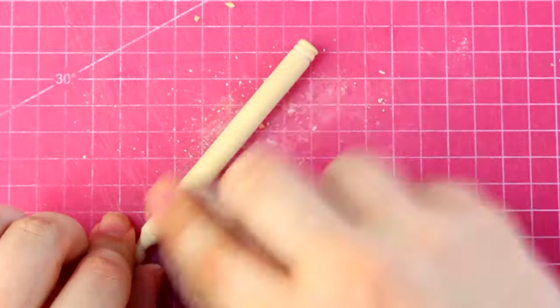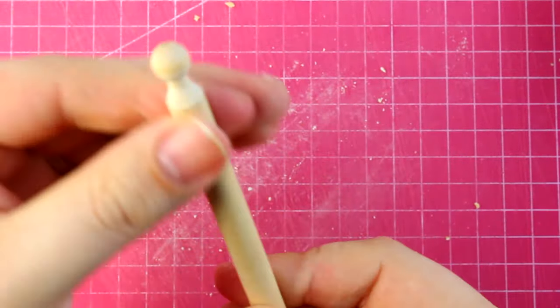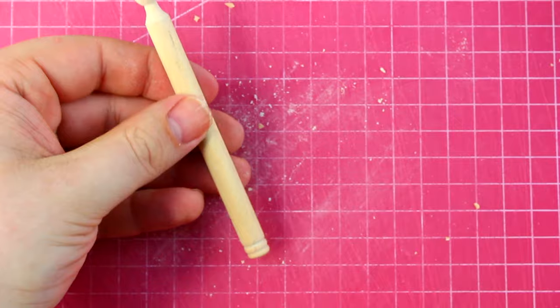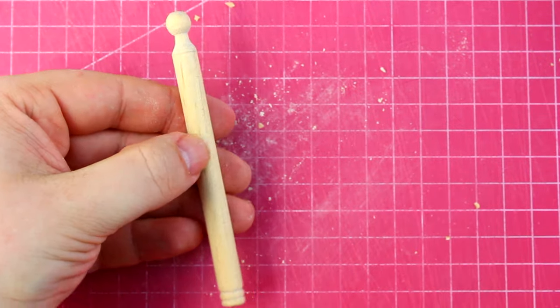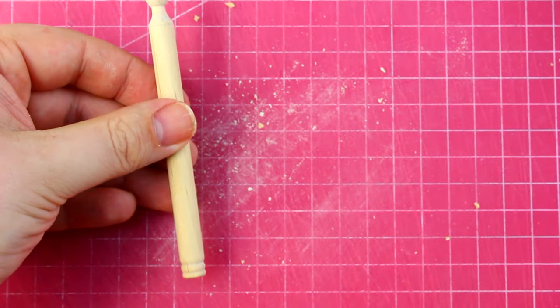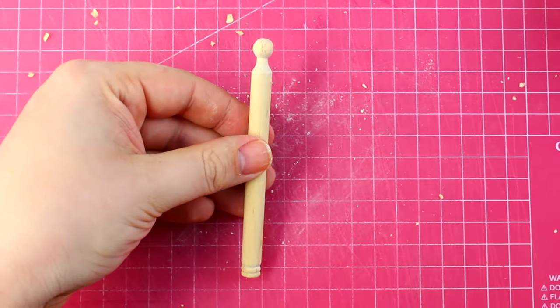There we go, a nice post for my miniature bed. Now this example is very simple, but you can get as complex as you like. Just remember to take your time, use little cuts, and you will have something you're really proud of.